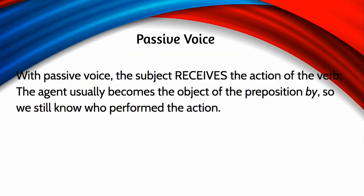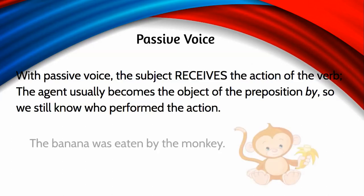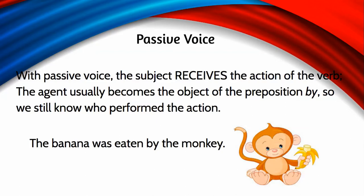In passive voice, that relationship changes. The subject receives the action, and the agent becomes the object of the preposition 'by.' When that prepositional phrase is included, we still know who performed the action. So: 'The banana was eaten by the monkey.' Banana is now the subject, 'was eaten' is the passive verb form, and monkey is now the object of a preposition — still the agent doing the eating.